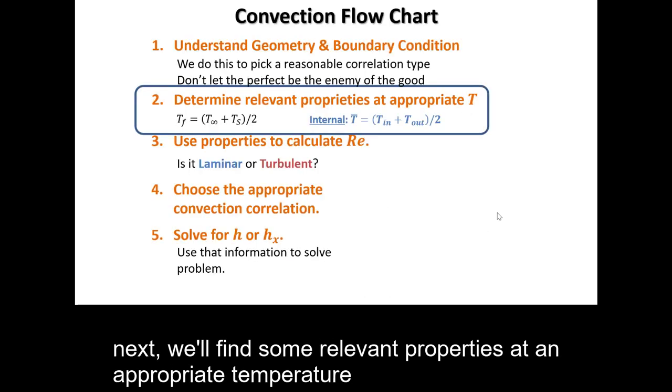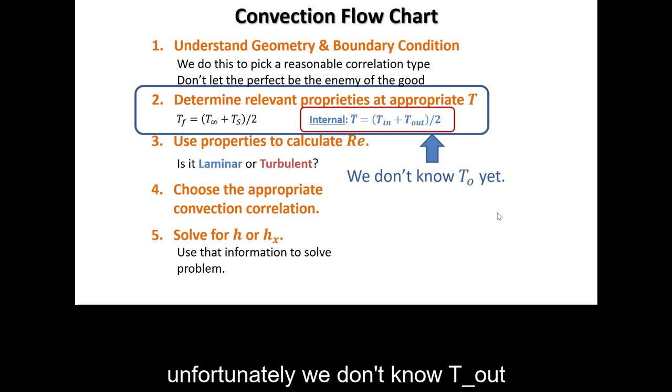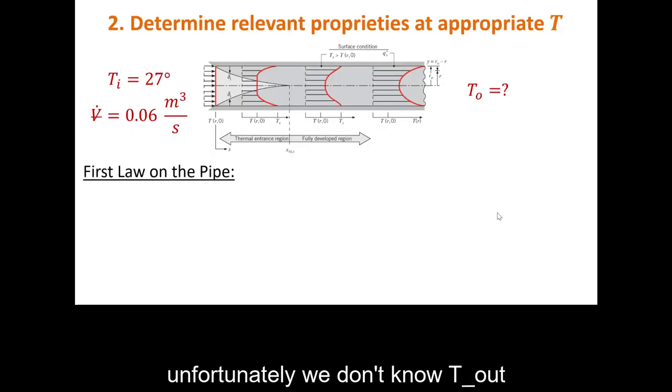Next, we'll find some relevant properties at an appropriate temperature. For internal convection, the appropriate temperature is the average temperature between the inlet and outlet of the channel. Unfortunately, we don't know T out. So, we'll have to find it.